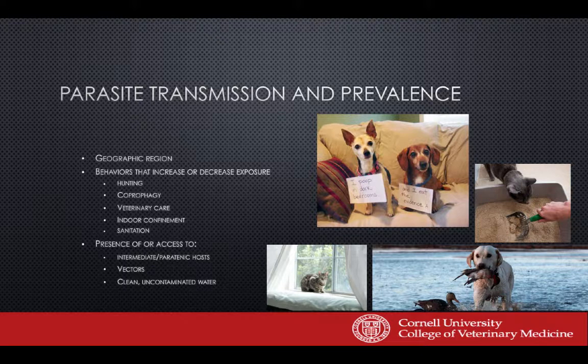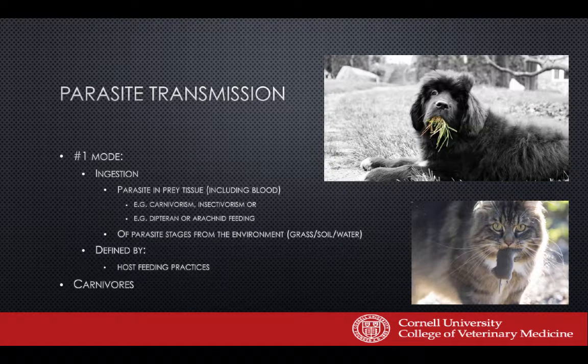Presence of or access to vectors — arthropods that can transmit parasites — and intermediate or paratenic hosts, meaning prey species necessary for life cycle completion, also factor in. Access to clean, uncontaminated water is part of this mix too. All of this combines to determine how likely it is that animals will have a parasite.